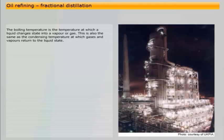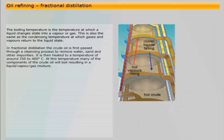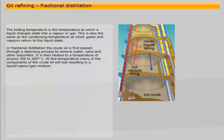The boiling temperature is the temperature at which a liquid changes state into a vapour or gas. This is also the same as the condensing temperature at which gases and vapours return to the liquid state. In fractional distillation, the crude oil is first passed through a cleansing process to remove water, sand, and other impurities. It is then heated to a temperature of around 350 to 400 degrees Celsius. At this temperature, many of the components of the crude oil will boil, resulting in a mixture of liquid, vapour, and gas.